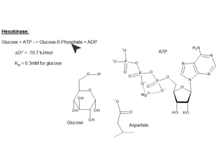Both these products are going to be released and regenerated at the end of the reaction. But first, if we look at our positions, we have carbon one, two, three, four, five, and six on this glucose. And we're going to be adding our phosphoryl group onto the oxygen at carbon six.